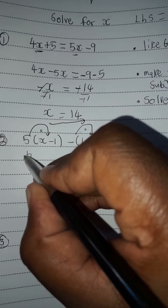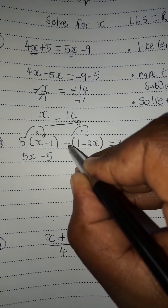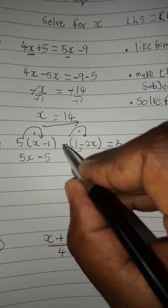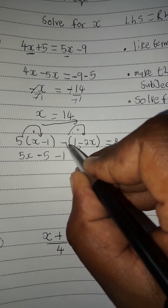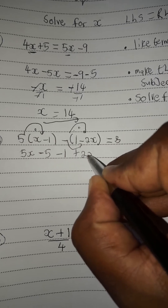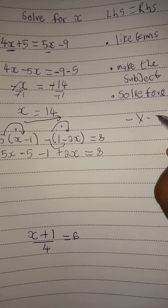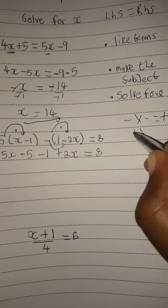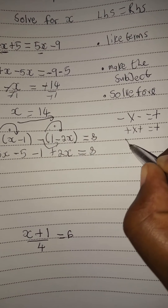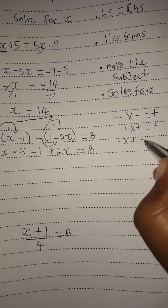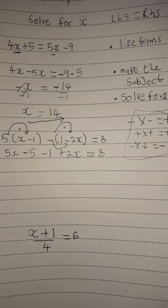This 5 will multiply everything that is inside the bracket. So in other words, we are going to see 5 times x, which will be 5x, and 5 times negative 1, which will be minus 5. This negative multiplies everything inside the bracket — negative times 1 is going to be minus 1, and negative times negative is going to be plus 2x. You also need to have knowledge of signs: negative times negative gives positive, positive times positive gives positive, and negative times positive gives negative. Always mind your signs.